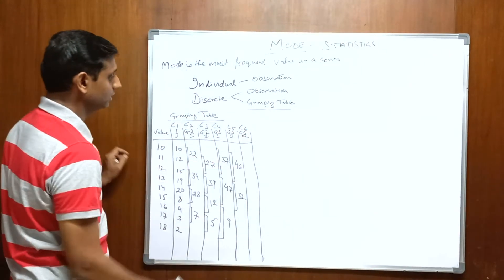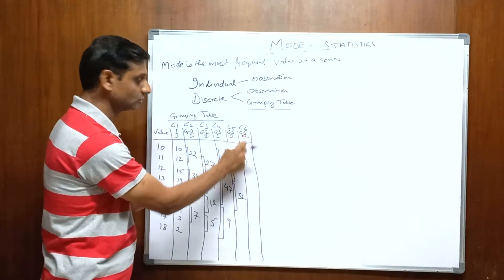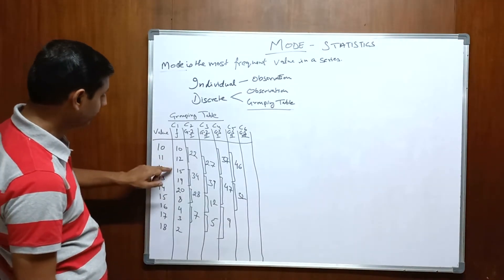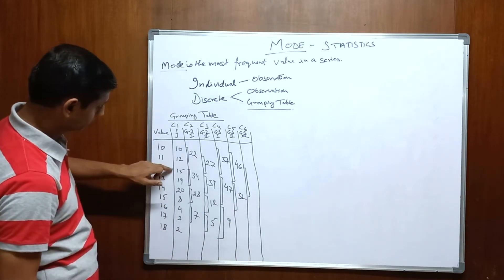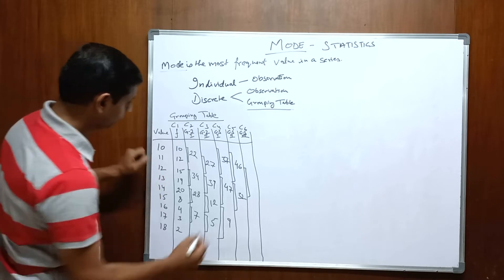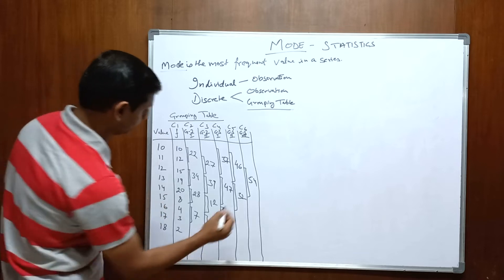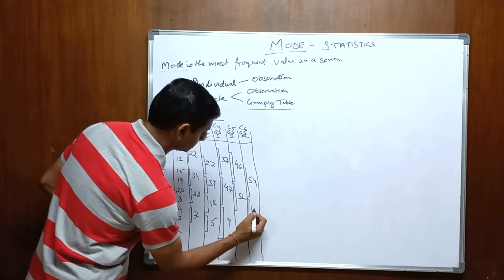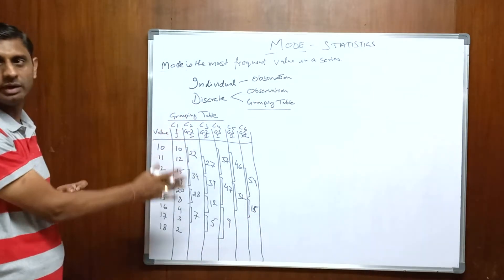Column C6 is G3 starting from the third frequency. The third frequency is 15, so 15, 19, 20 form the first group giving 54. Then 8, 4, 3 gives 15. This completes all 6 columns of the grouping table.